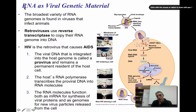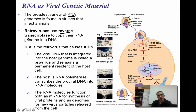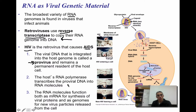The broadest variety of viruses out there are considered RNA viruses, and these are the ones found in viruses that infect animals. Sometimes they're called retroviruses, and these retroviruses are going to use something called reverse transcriptase to copy their RNA genome into the DNA of the host cell. HIV is the most well-known retrovirus and is the one that actually causes AIDS. The viral DNA that is integrated into the host genome is going to be called the provirus, and it's going to remain basically a permanent resident of that host cell. The host's RNA polymerase is going to transcribe the proviral DNA into RNA molecules, which function both as messenger RNA for the synthesis of viral proteins and as genomes for the new viral particles.